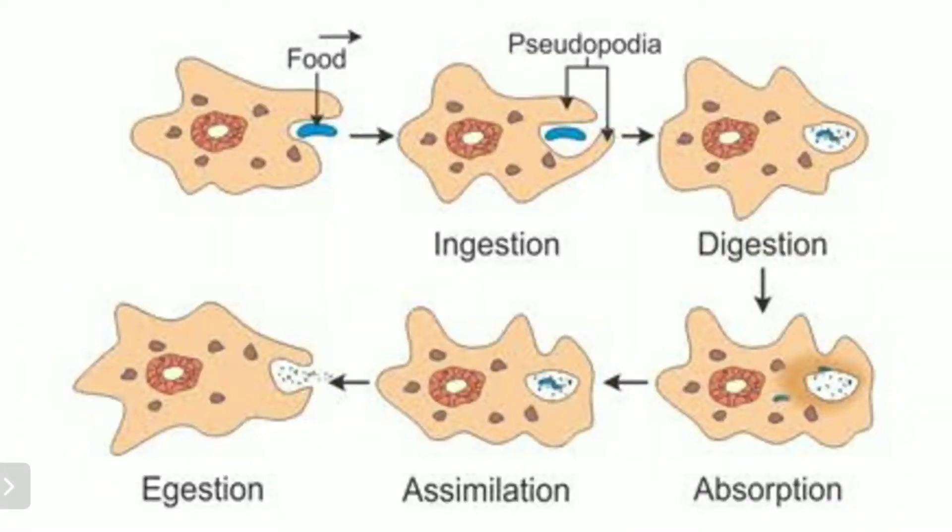We are talking about nutrition in animals. There are certain animals which are unicellular. Examples of such animals are amoeba, euglena, paramecium, and chlamydomonas. So we are talking about amoeba.